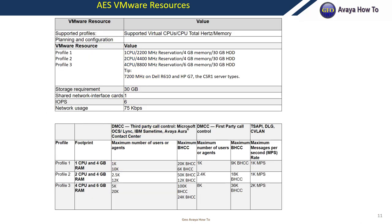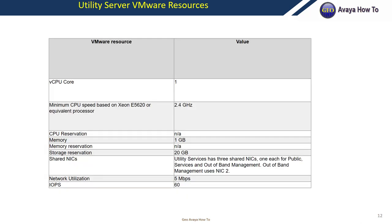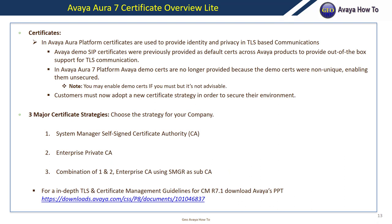AES VMware resources — decide which profile will work best for your environment. We decided to deploy Profile 3 mainly because it's not that bandwidth intensive and we had more than enough resources to allocate to it. For the Utility Server, there's only one profile to choose from, so it's pretty straightforward.